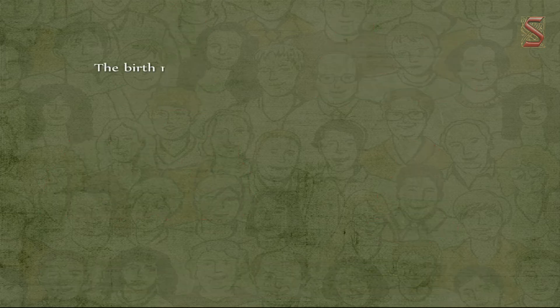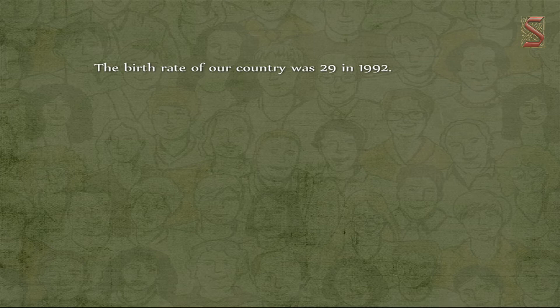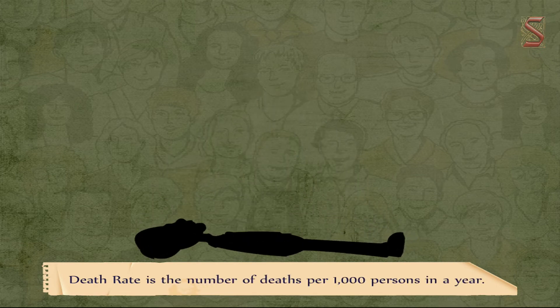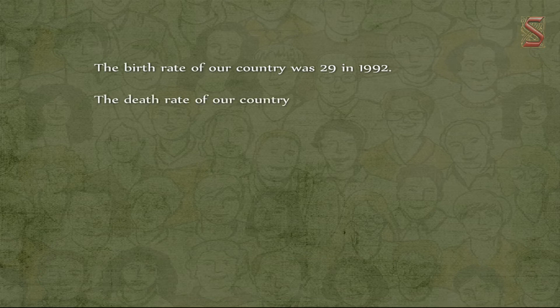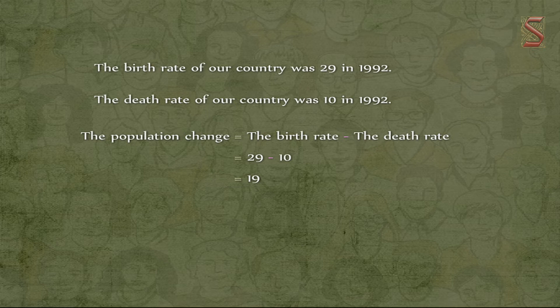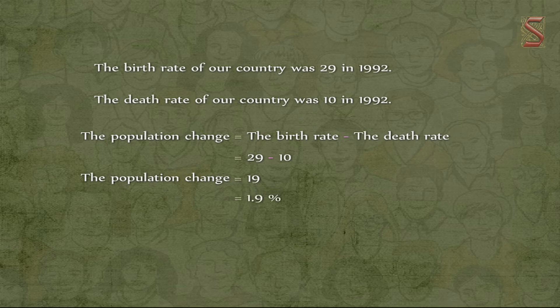For example, the birth rate of India was 29 in 1992, meaning 29 live births took place for every thousand people. Death rate is the number of deaths per thousand persons in a year; in 1992 it was 10, meaning 10 deaths per thousand. Population change is calculated by subtracting the death rate from the birth rate: 29 minus 10 equals 19, meaning 19 people were added per thousand that year, expressed as a population growth rate of 1.9 percent.